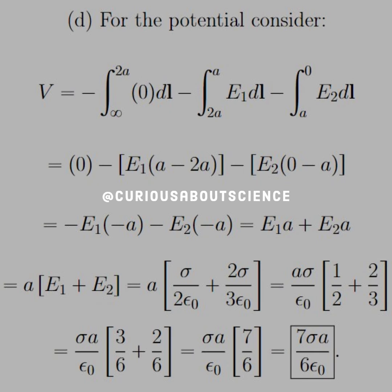Which just turns out to be a couple of A's minusing one another, and we can simplify down to A times E1 plus E2. Very convenient. Plug them in, simplify the algebra, and then we're left with the potential of 7 sigma A over 6 epsilon naught.